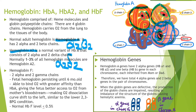Hemoglobin F, or fetal hemoglobin, is composed of two alpha chains and two gamma chains, and is found in the fetus and newborn babies up to six months of age. It is able to bind oxygen with greater affinity than hemoglobin A, giving the fetus better access to oxygen from the mother's bloodstream and makes the oxygen dissociation curve shift to the left, similar to lower 2,3-BPG conditions.